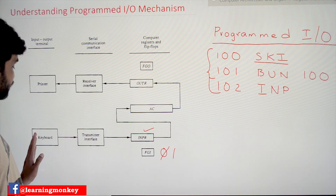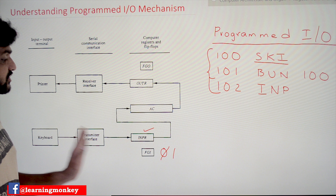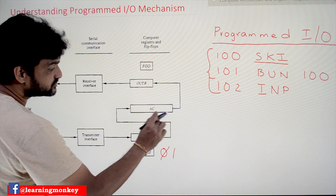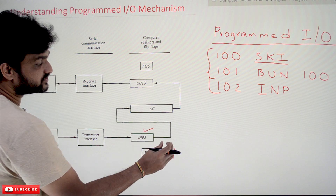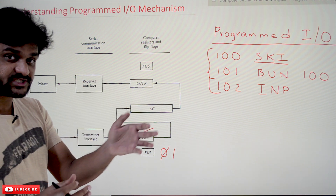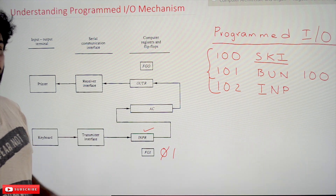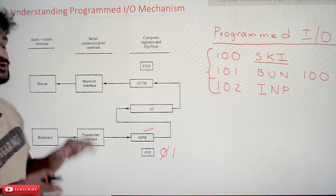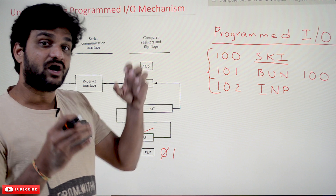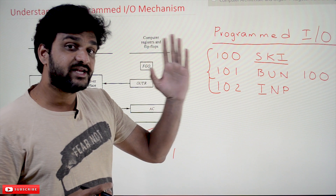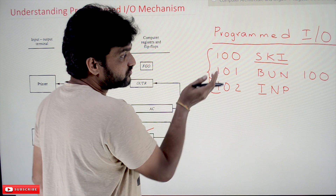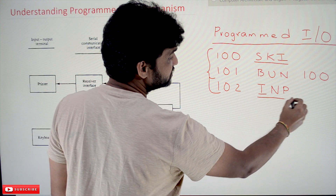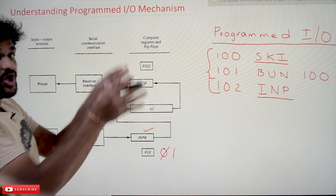Whenever the flag bit is 1, if we try to press another key it will not get transferred onto the input register. Whenever INPR flag is 1, the computer knows there is some value on the input register that has to be fetched and transferred onto the accumulator. This is how the I/O configuration works. The ALU will execute these sequence of lines of code, and the input will be transferred onto the accumulator.